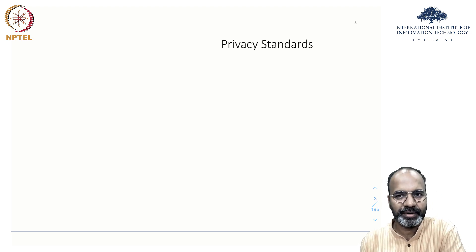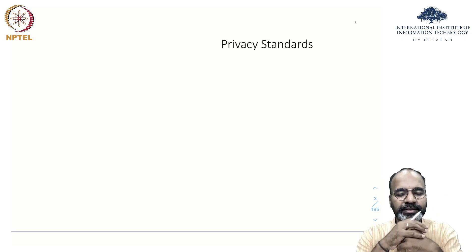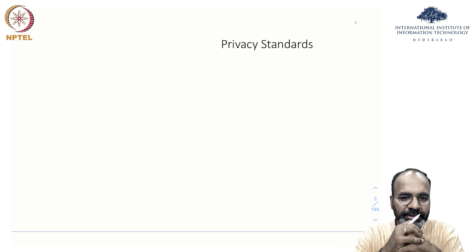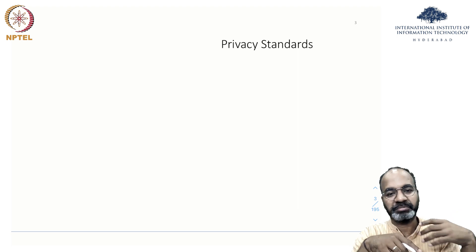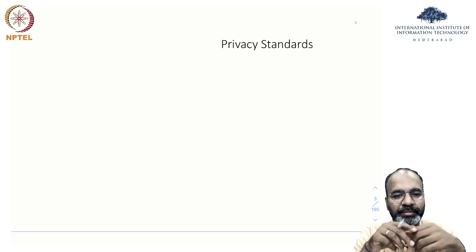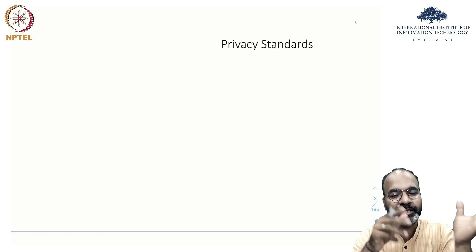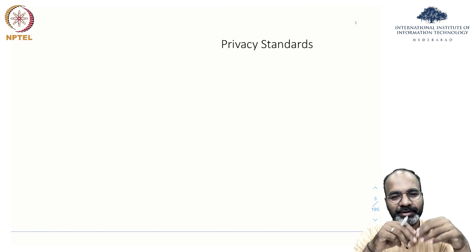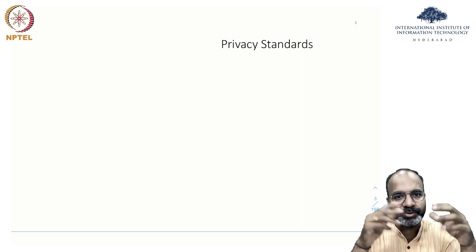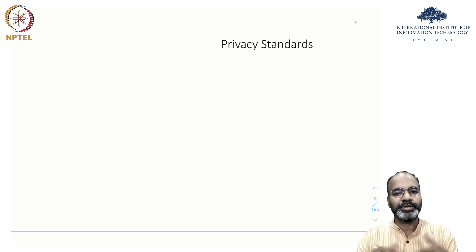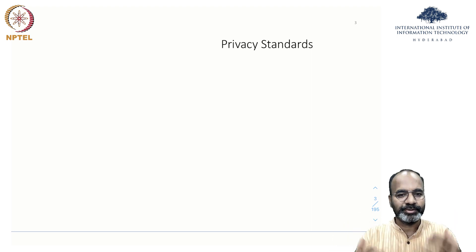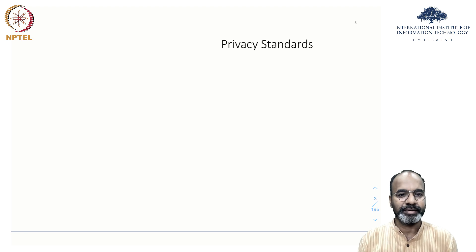What I wanted to cover this week is privacy standards. Privacy standards is kind of building on top of the regulations and privacy laws. The regulations may say that consent has to be taken, only the necessary information has to be collected — collection limitation. Standards help in making sure that those principles are practiced, documented, and that processes are followed. That's what a standard is for.